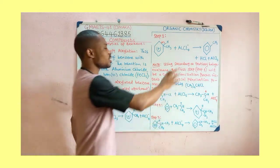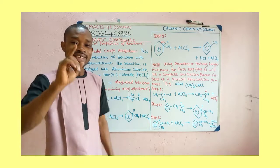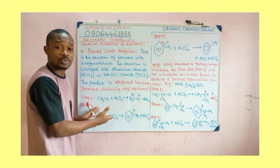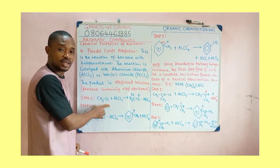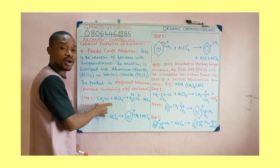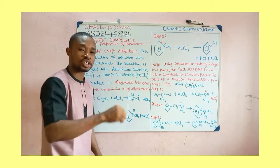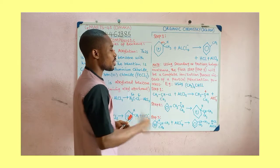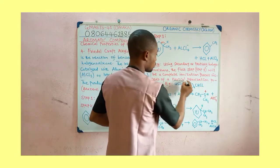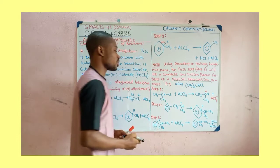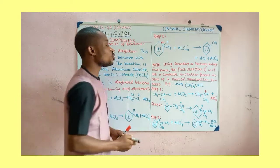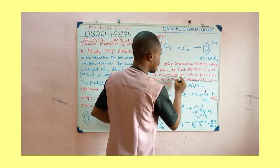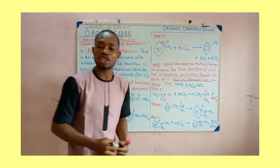Now, what if you use a secondary or tertiary haloalkane? The only difference between what happens here and when we use a primary haloalkane is simply the first step. When using a primary haloalkane, the process is a partial polarization process. But if you use a secondary or tertiary haloalkane, the first step will be a complete ionization process.